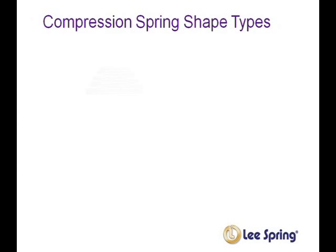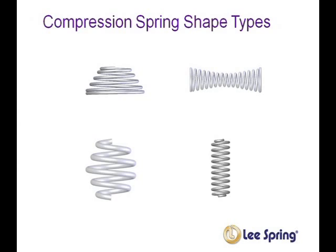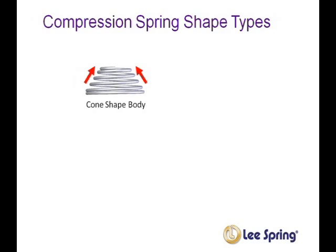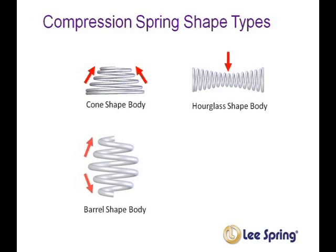Compression springs can come in any variety of shapes, and custom designs may have any number of shapes depending on the application. Some common custom shapes include the cone shape, where the spring radius decreases — this is common for a battery spring. The hourglass shape tapers tighter toward the center with outer coils having a larger diameter. The barrel shape is reduced at the ends and wider in the center. The reduced end spring is straight across the center coils and tapers only toward the end coils.